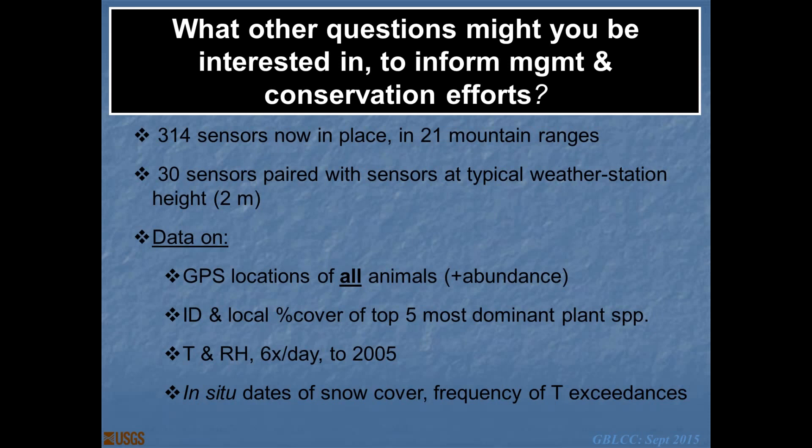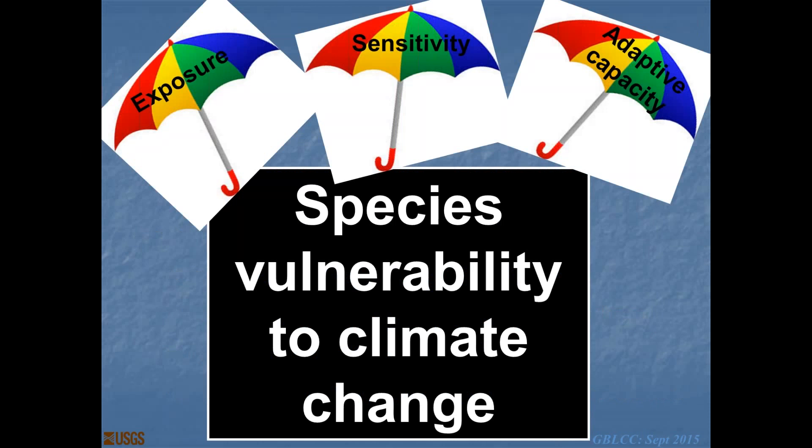Species vulnerability to climate change has really been cast as falling under three umbrellas: exposure, sensitivity, and adaptive capacity. Exposure is commonly defined as the magnitude of change in aspects of climate. Adaptive capacity is a species' inherent ability to accommodate and cope with climate change through behavioral plasticity, through evolution, and through migratory ability.